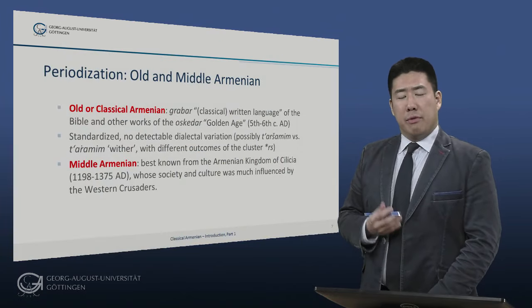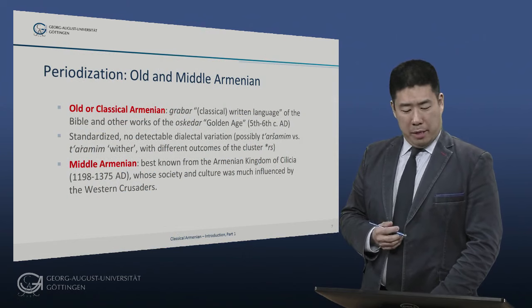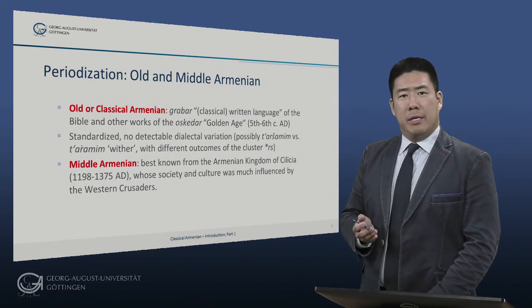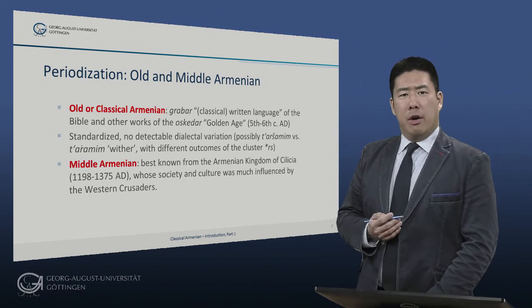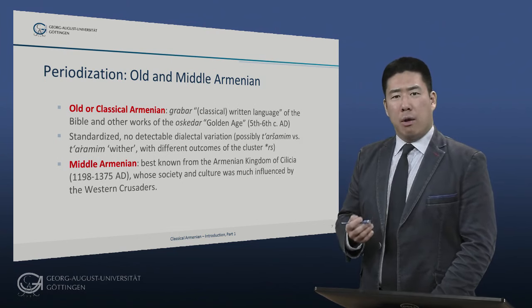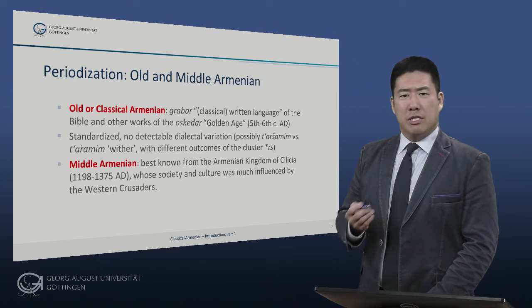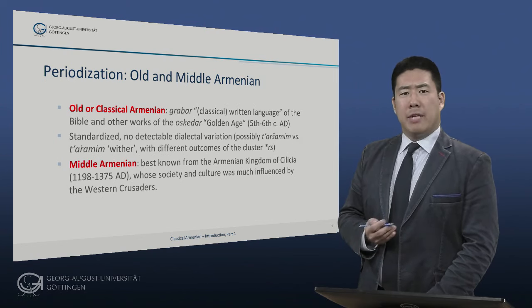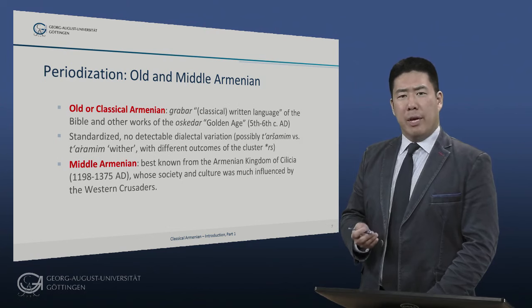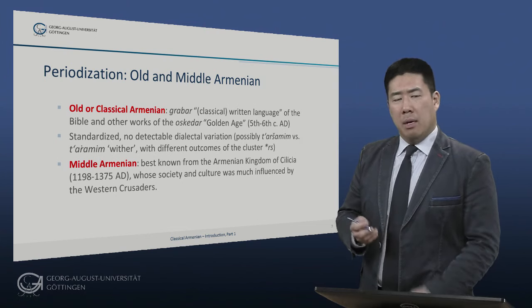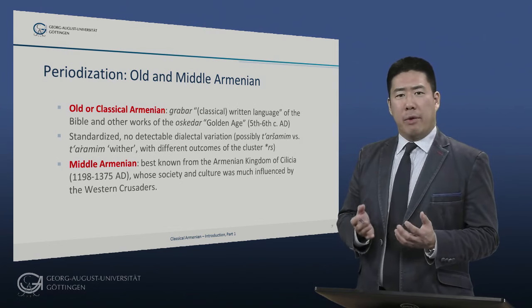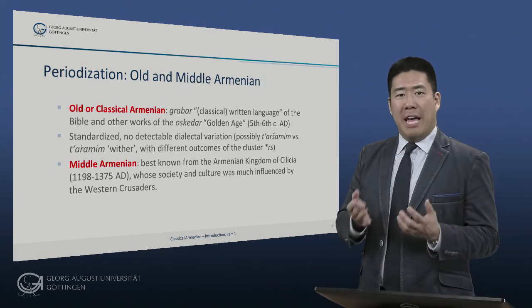Armenian is traditionally divided into three periods: Old, Middle, and Modern Armenian. Old or Classical Armenian is known in the Armenian language as Grabar, the classical written language of the Bible and other works of the Voskedar — the Golden Age — i.e., the 5th and 6th centuries AD. This language was highly standardized. There is no detectable dialectal variation, with one possible exception: two variant forms of the verb for 'wither,' tar-shamim or tar-ramim. Otherwise it's very difficult to detect any dialectal variation, suggesting that this was a standardized literary language used by all the writers of that Golden Age.